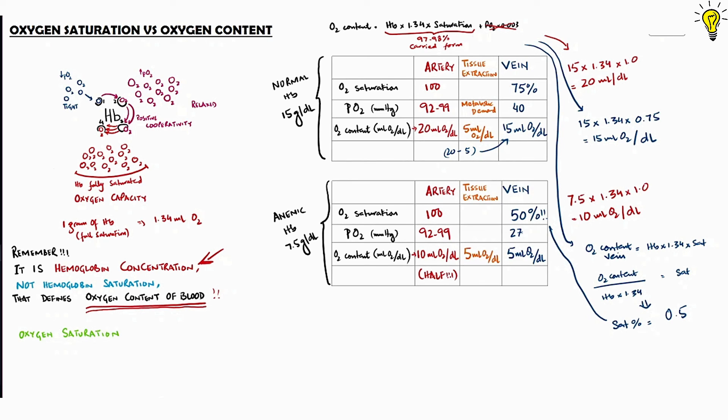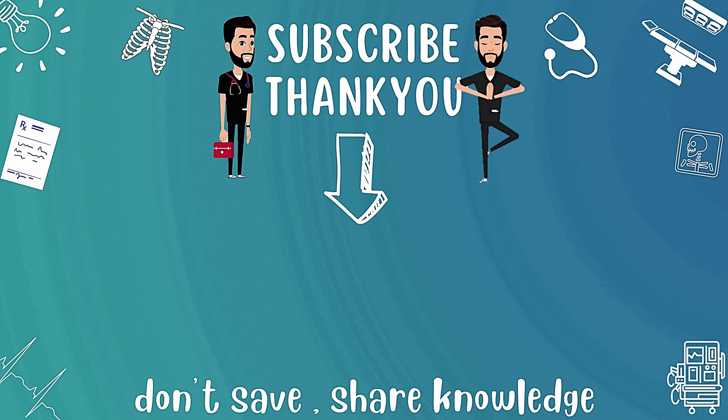So you see how oxygen content is really dependent more on hemoglobin concentration than hemoglobin saturation. Oxygen saturation on the other hand is defined by left and right shifts in dissociation curve, subject to physiological parameters and of course the surrounding PO2 levels. This is it for today. Join us next time as we get back to oxygen cascade and discuss arterial oxygen transport system.